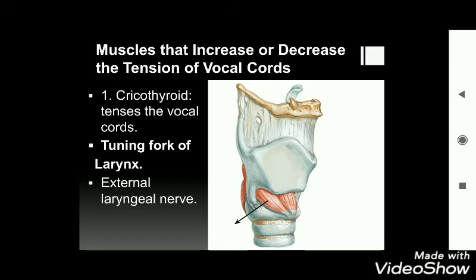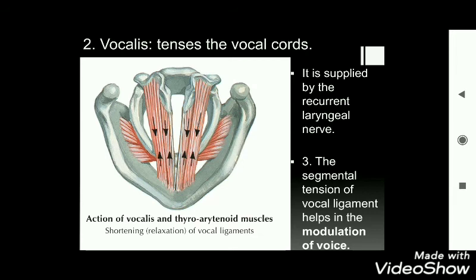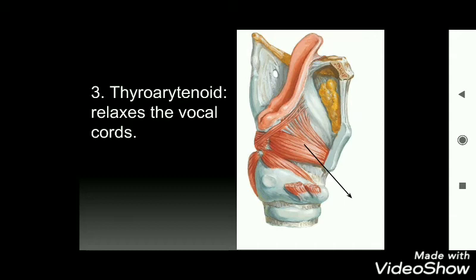Muscles that increase or decrease the tension of the vocal cords: cricothyroid tenses the vocal cords and is called the tuning fork of the larynx; it is supplied by the external laryngeal nerve. Vocalis also tenses the vocal cords and is supplied by the recurrent laryngeal nerve; segmental tension of the vocal ligament helps in voice modulation. Thyroarytenoid relaxes the vocal cords.